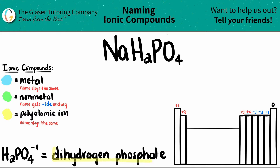That ion is always called dihydrogen phosphate — 'dihydrogen' meaning two hydrogens. So here is my polyatomic: it's the H2PO4.